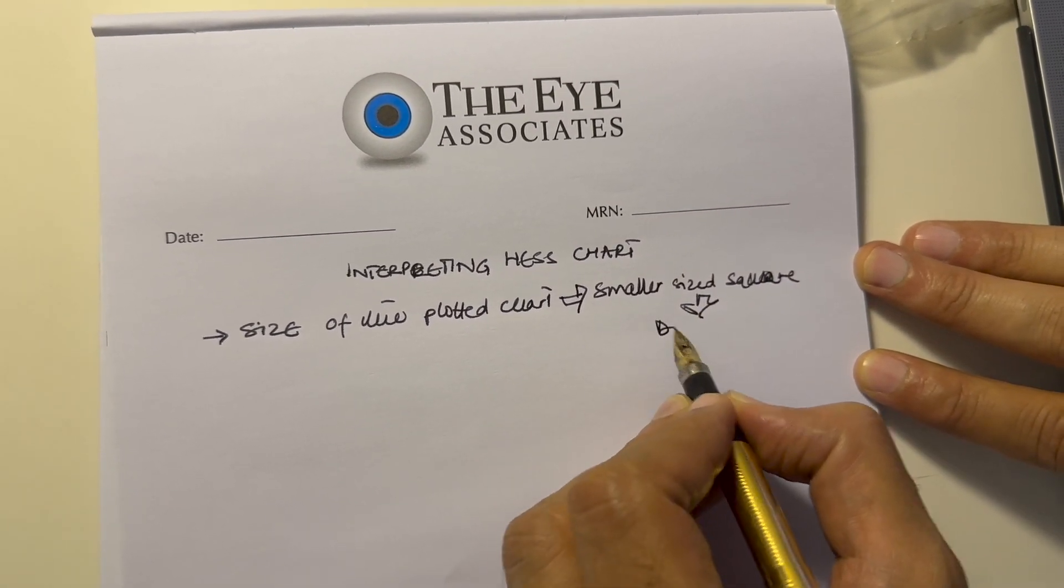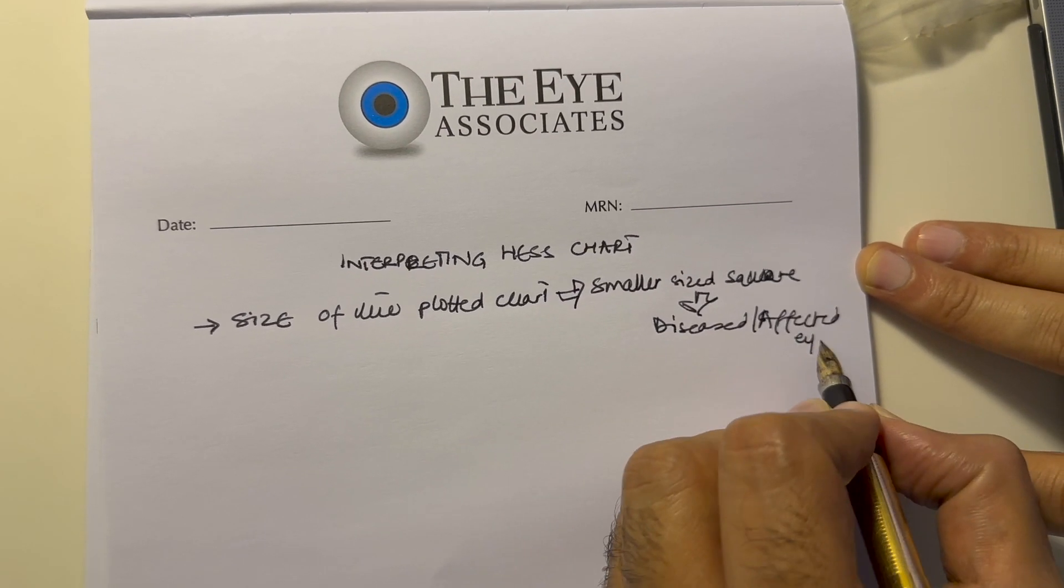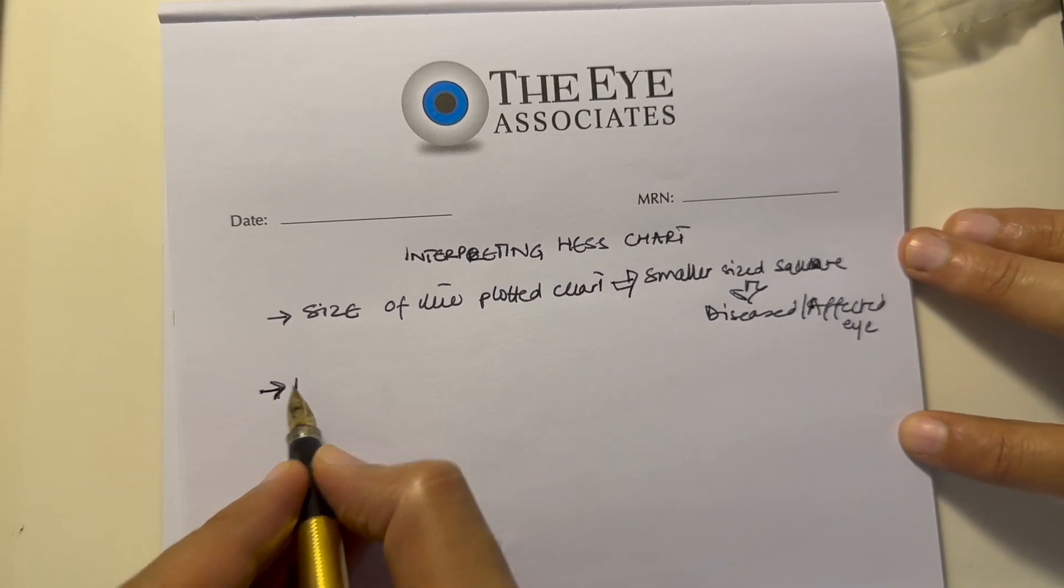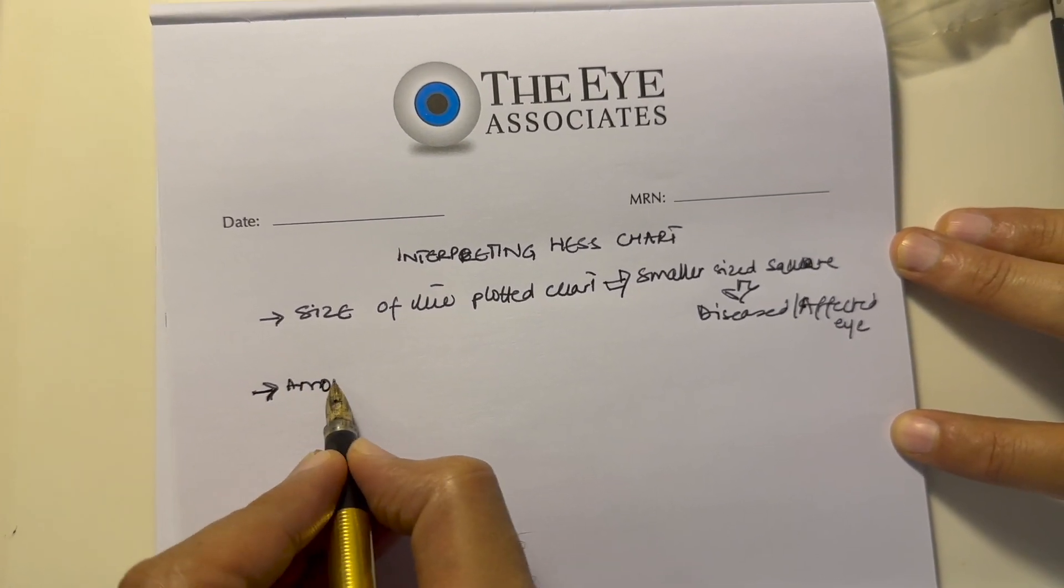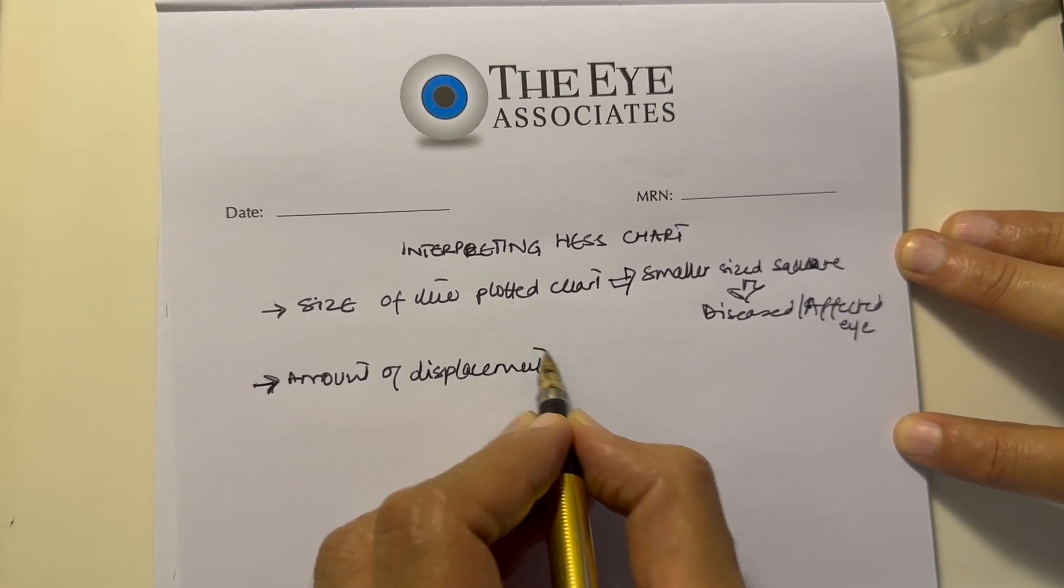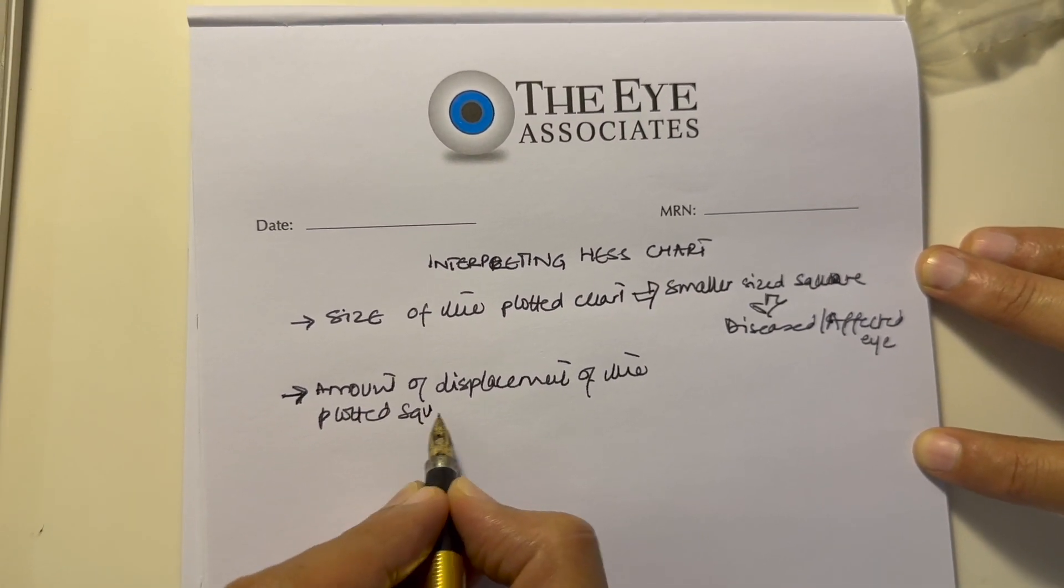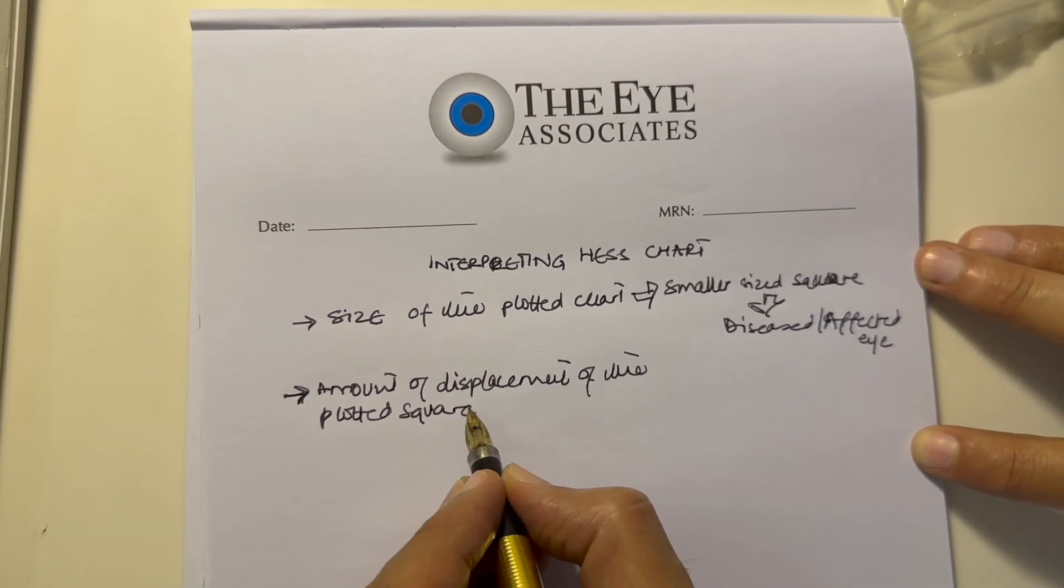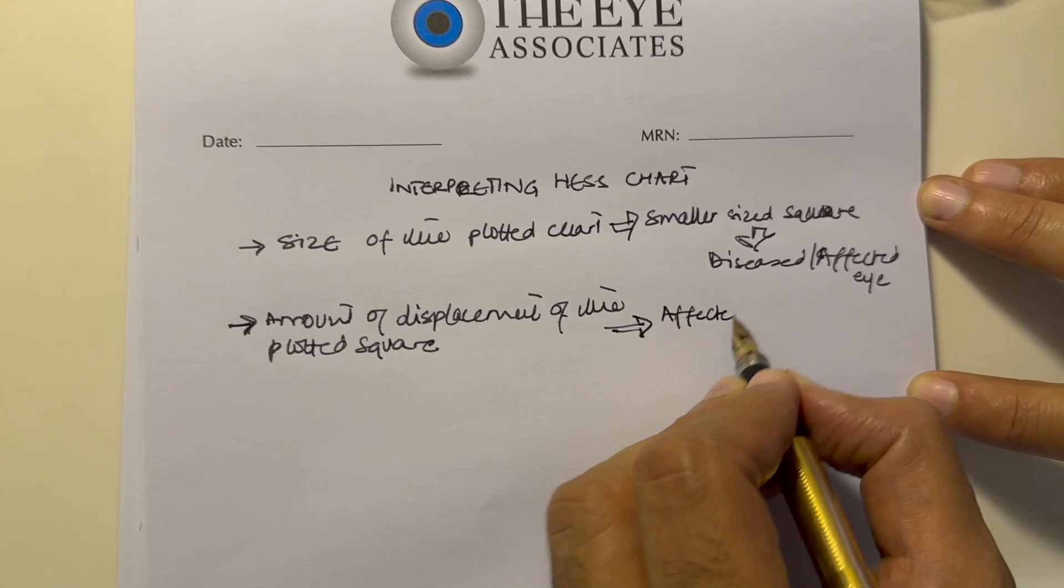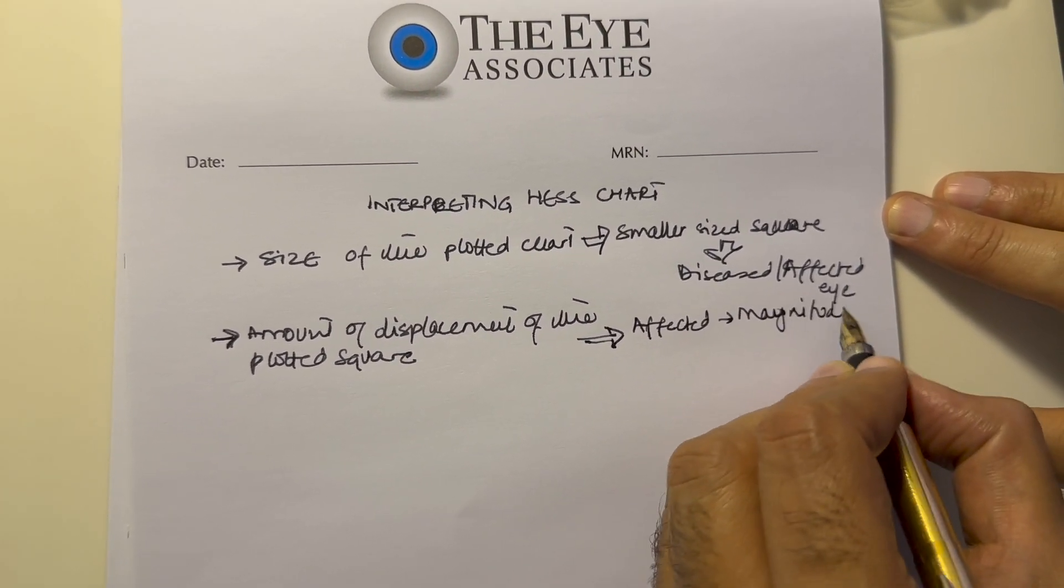The second thing to see is the amount of displacement of this plotted square. The amount of displacement in the affected eye is the magnitude of primary deviation.